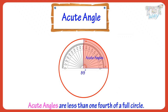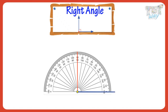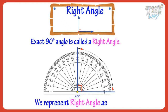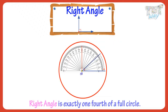Now let's learn about the right angle. An exact 90 degree angle is called a right angle. We represent the right angle like this. So a right angle is exactly one-fourth of a full circle.